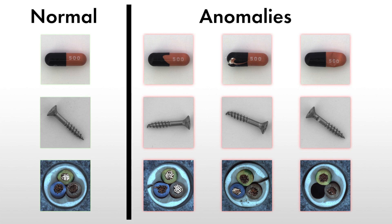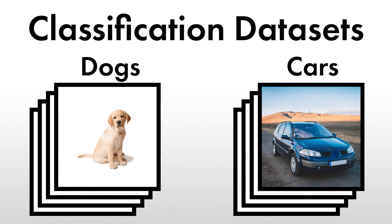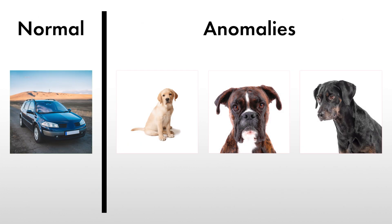Until 2019, anomaly detection researchers could use only very few realistic benchmark datasets. Instead, image classification datasets were used to test new anomaly detection methods. But a dog is not a car with a large defect — in other words, this did not reflect the requirements of industrial anomaly detection.